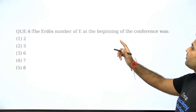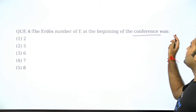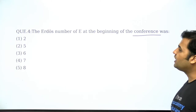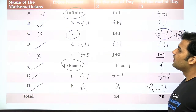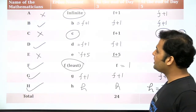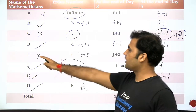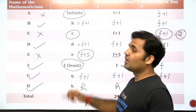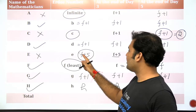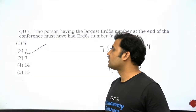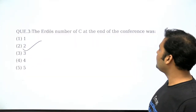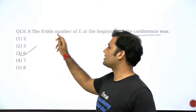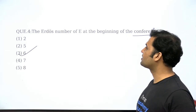The Erdos number of E at the beginning of the conference. Conference ki beginning mein E ka Erdos number kya tha? E ka Erdos number is F+5, and F ka value 1 hai. So 1+5 = 6. E ka Erdos number at the beginning of the conference will be 6. Third option is the correct answer.